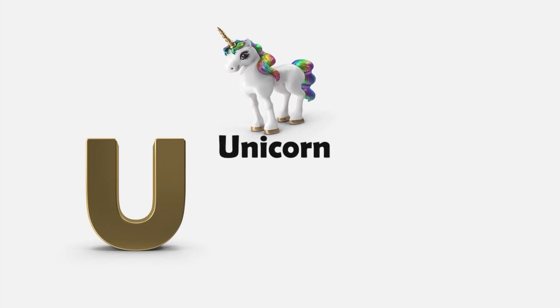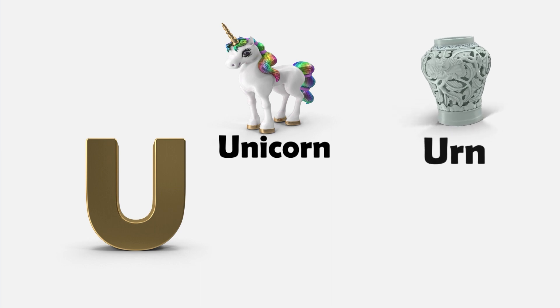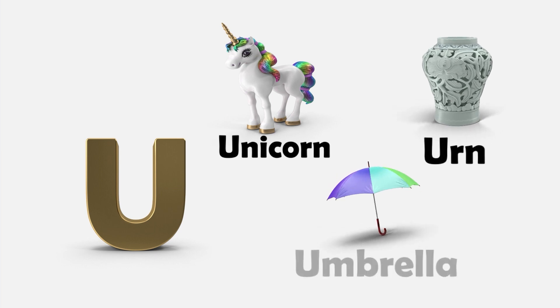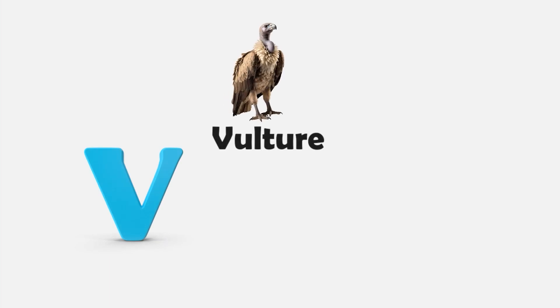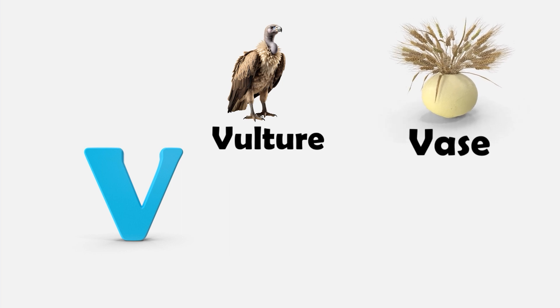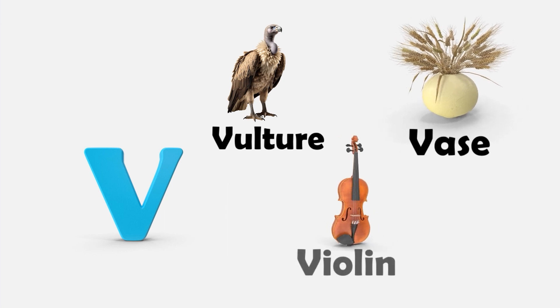U — U is for Unicorn. U is for Urn. U is for Umbrella. V — V is for Vulture. V is for Vase. V is for Violin.